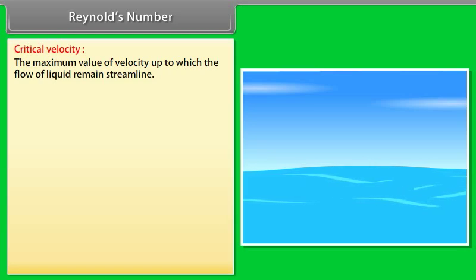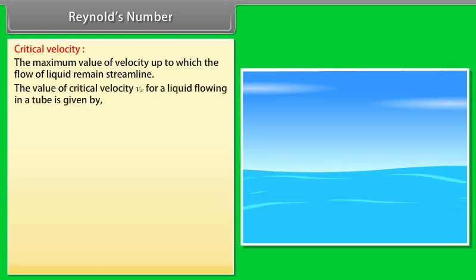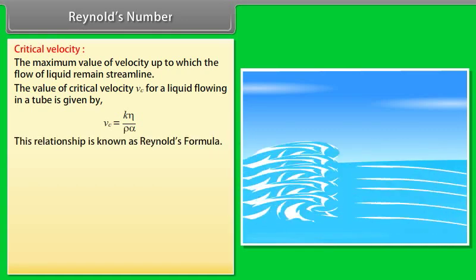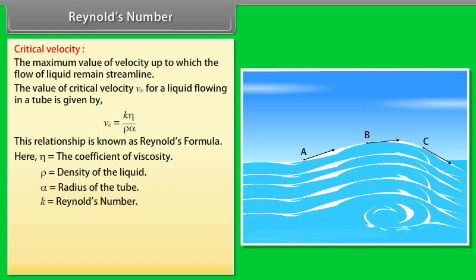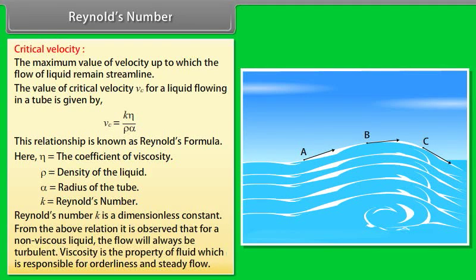Reynolds number. Critical velocity is the maximum value of velocity up to which the flow of liquid remains streamlined. The value of critical velocity VC for a liquid flowing in a tube equals K times eta over rho times R. This relationship is known as Reynolds formula. Here eta is the coefficient of viscosity, rho is the density of the liquid, R is the radius of the tube, and K is Reynolds number. Reynolds number K is a dimensionless constant. From the above relation it is observed that for a non-viscous liquid the flow will always be turbulent. Viscosity is the property of fluid which is responsible for orderliness and steady flow.